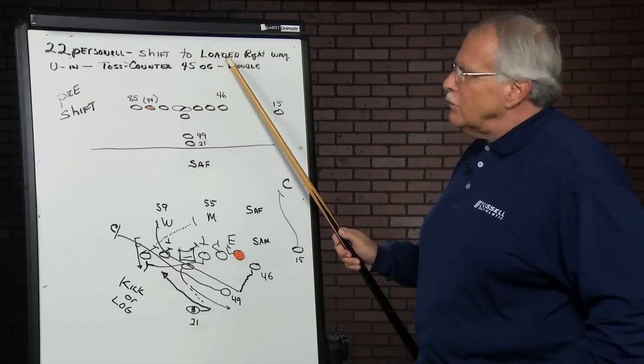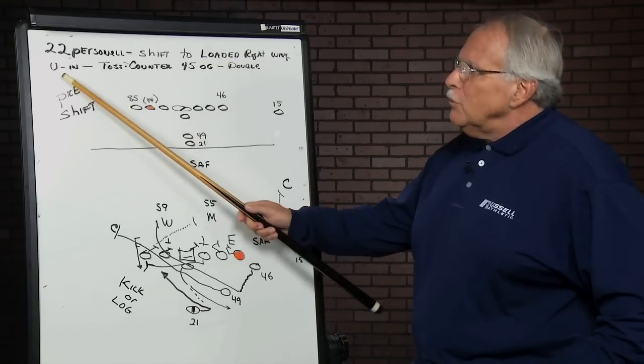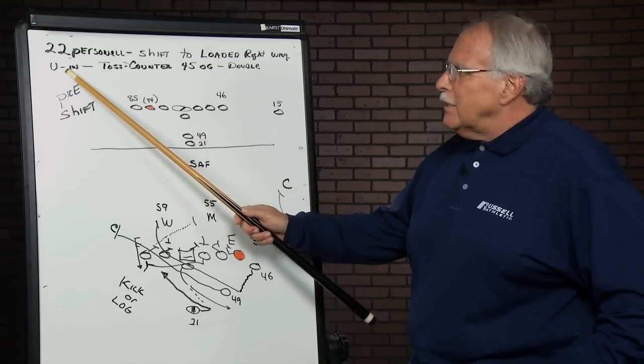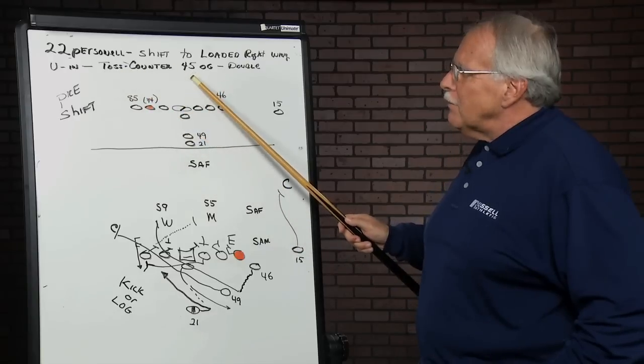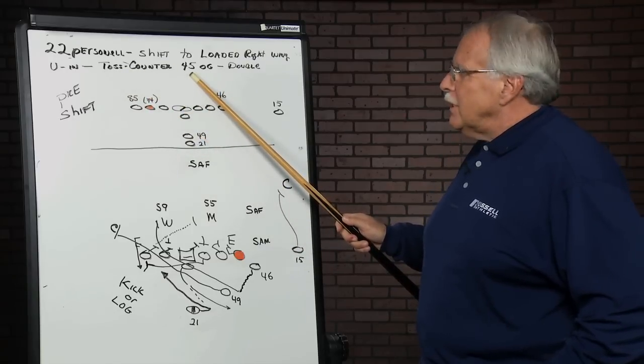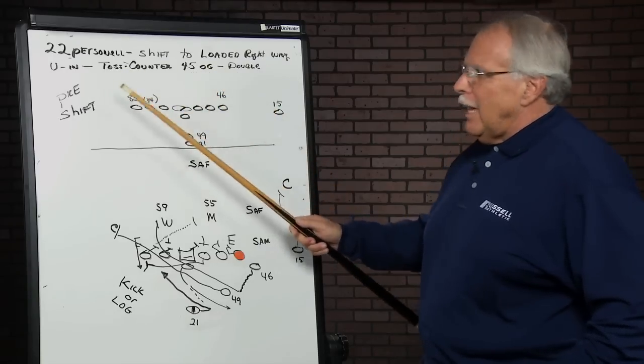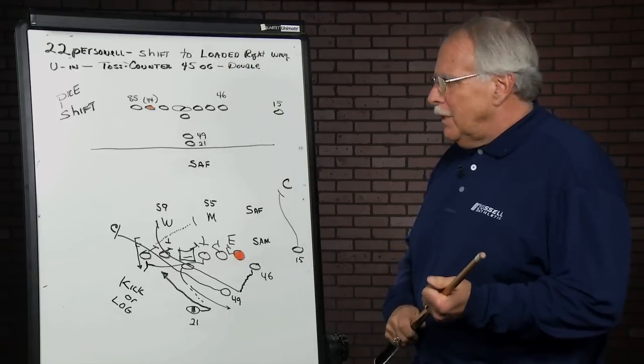Loaded being unbalanced, which you don't see much in the NFL. U in, which means the U tight end comes in, toss counter 45, which is the old counter tray, OG double. It's a lot of words in there, but that's what you'd hear in the huddle.